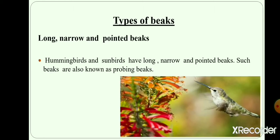Long, narrow and pointed beaks. Hummingbirds and sunbirds have long, narrow and pointed beaks. Such beaks are also known as probing beaks as they help birds to suck the nectar from flowers.